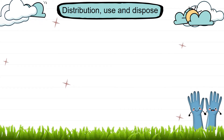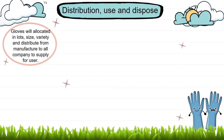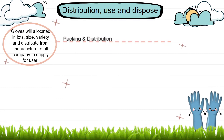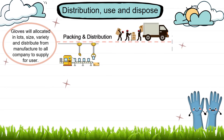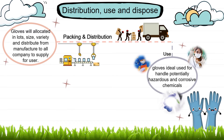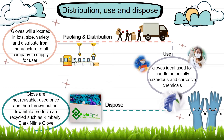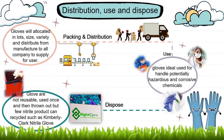Next, we move to distribution, use, and disposal. Gloves will be allocated in lots, size, and variety, and distributed from the manufacturer to all companies to supply for users. This glove is used to handle potentially hazardous and corrosive chemicals. For disposal, the glove is not reusable, but a few nitrile products can be recycled, such as Kimberly-Clark nitrile gloves.